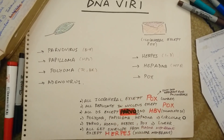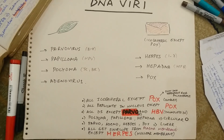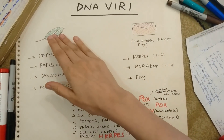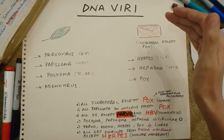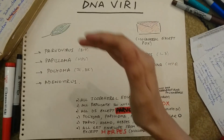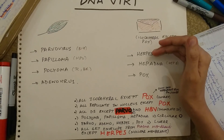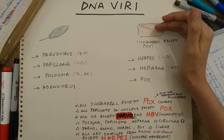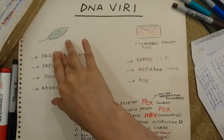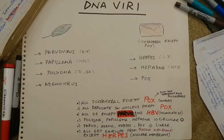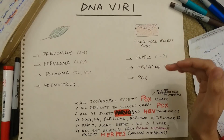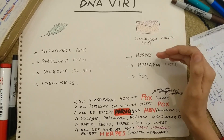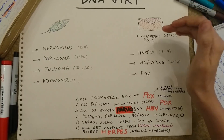So let's begin. The first thing that I want you guys to notice is that on the right side I have an envelope and on the left side I have a leaf. This is really important to remember because once you've pictured this you're never going to forget it. The right side has the righteous people that keep themselves covered in an envelope, and on the left side there are the naked people who don't like getting covered. So on the right side we have herpes, hepadna, and pox — these are the DNA viruses that are enveloped.